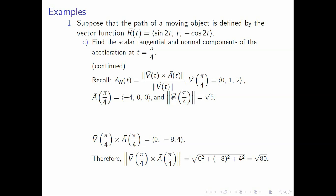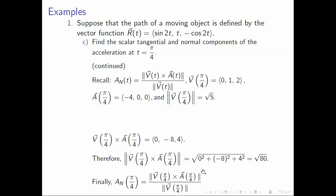Therefore, the scalar normal component from the formula is equal to square root of 80 over square root of 5, and if you simplify you get 4. So the scalar normal component when t equals π over 4 is 4. That's it for number 1; let's move on to the next item.